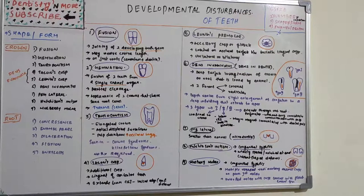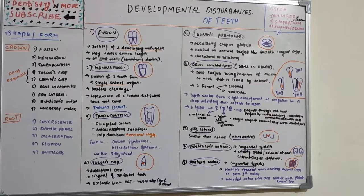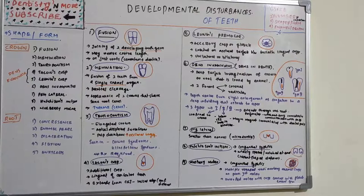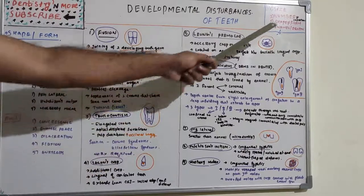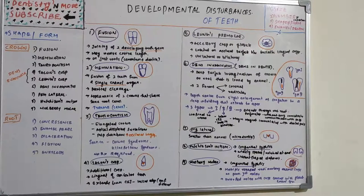Hello everyone, welcome back to another session in dentistry. Today's class is about the developmental disturbances of teeth with respect to shape or form. We have various classifications seen in the crown and root.